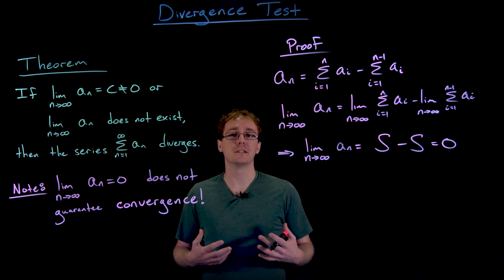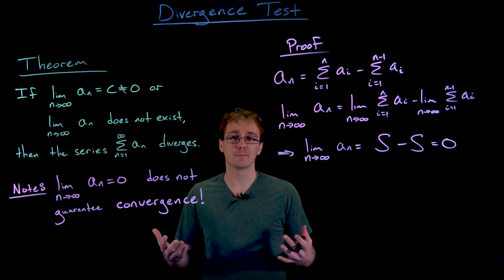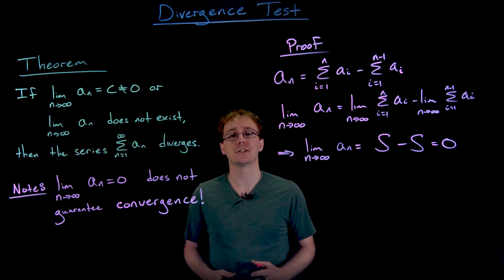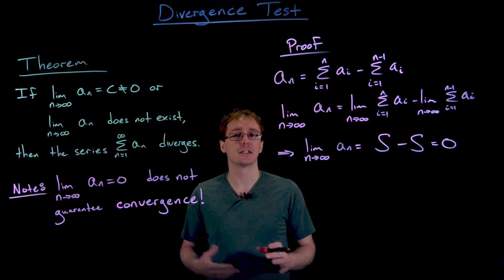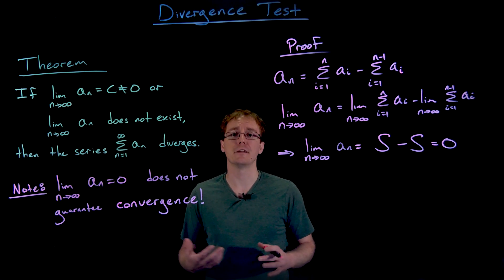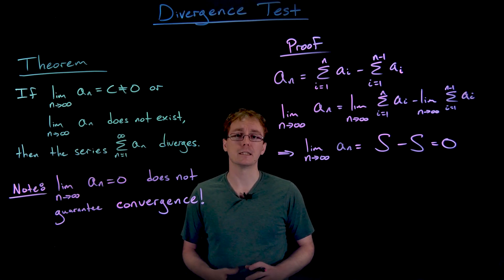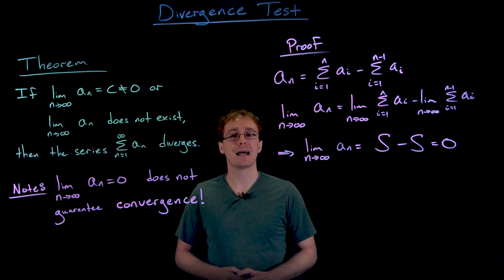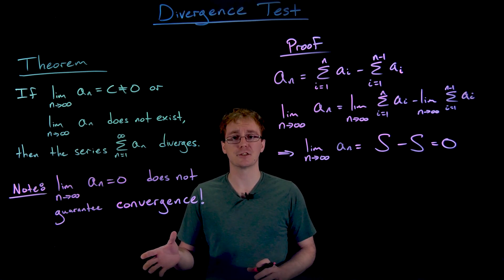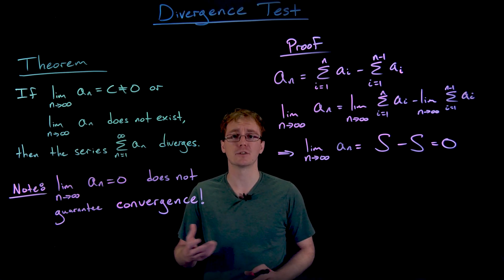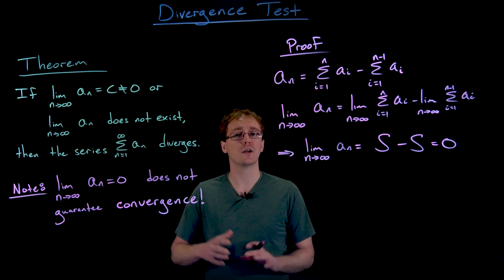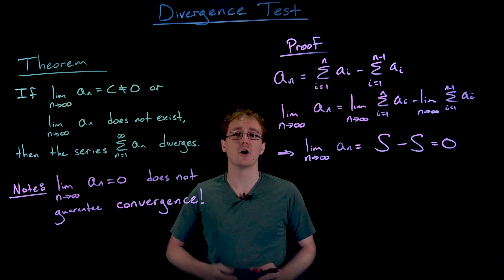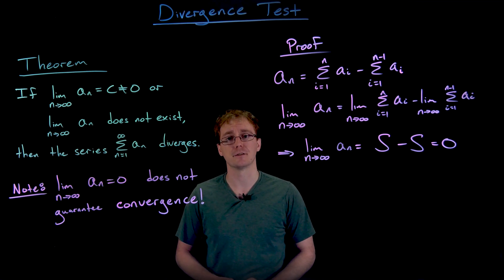So if we have the limit of the terms going to anything other than zero, we know right away that the entire series is going to diverge and it's probably not worth investigating more deeply. However, if the limit as n approaches infinity of a sub n goes to zero, we aren't sure whether the series converges or diverges, but we know that we need to do some more investigation.